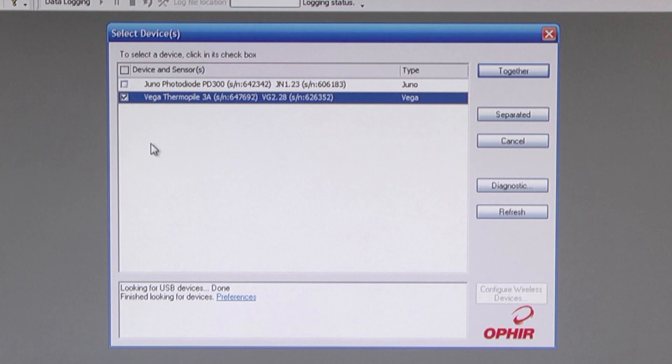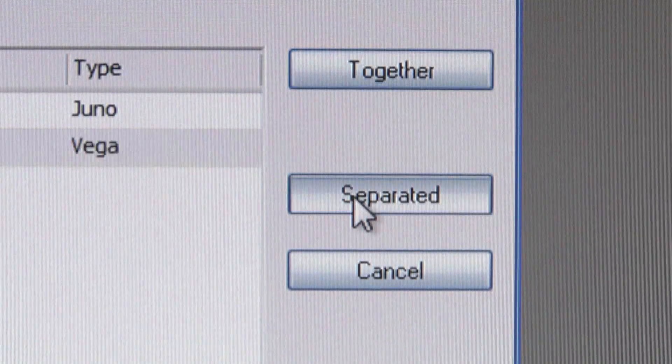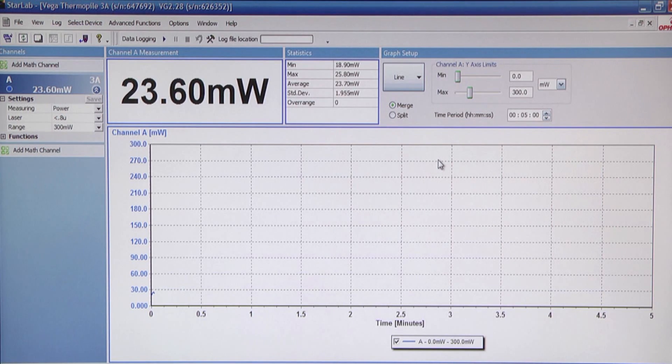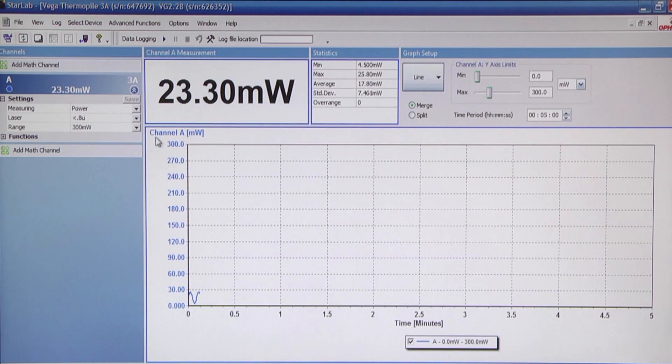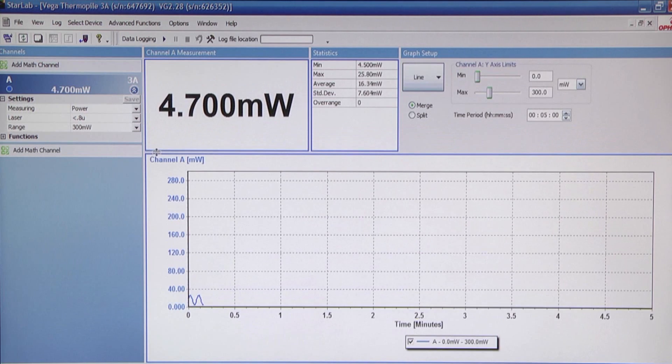We can either show each source in a separate window or all in one window. Since we have one source, let's click on separated. This opens the measurement screen. We can adjust sizes by dragging the window frames.